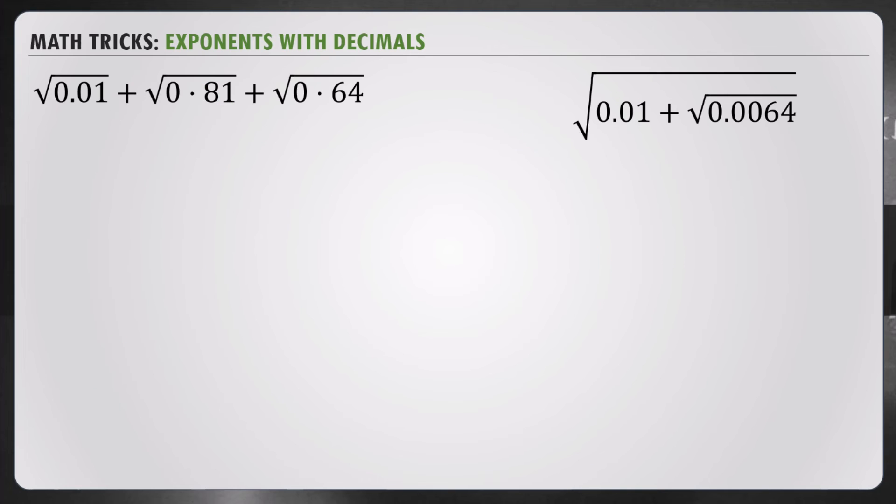So, let's work out some more exponents with decimals. This trick will work. All right. We have 0.01. The square root of 0.01, square root of 1 is 1. And how many decimal places? 2 divided by 2. So, 1 decimal place. So, the answer is 0.1.